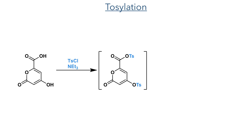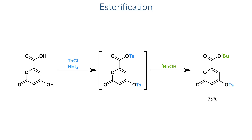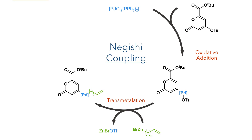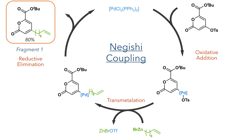The synthesis began by reacting a pyrone bearing a hydroxyl group and a carboxylic acid with tosyl chloride and triethylamine. This tosylates both the hydroxyl group and the carboxylic acid. Tert-butanol is then added to the reaction mixture, forming a tert-butyl ester in a 76% yield. The remaining tosylate then reacted in a Negishi coupling: palladium first undergoes oxidative addition into the carbon-tosylate bond, then undergoes transmetallation with an alkyl zinc bromide compound. The palladium, now with two carbon ligands, undergoes reductive elimination, generating fragment 1 in an 80% yield.